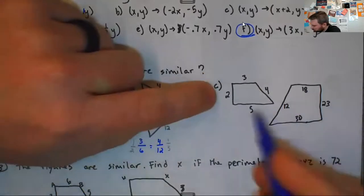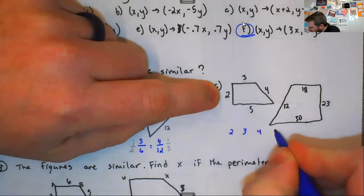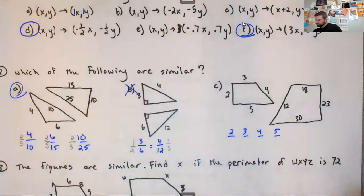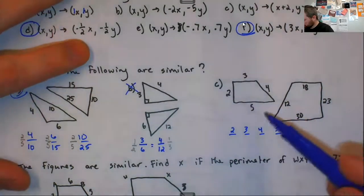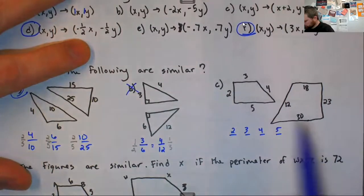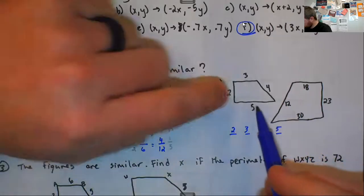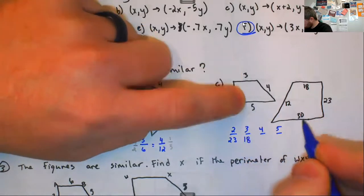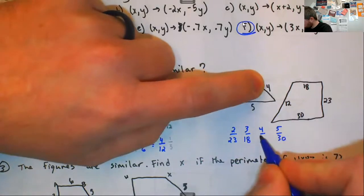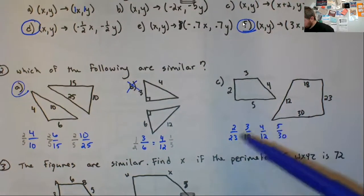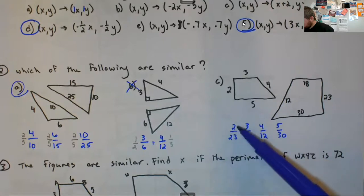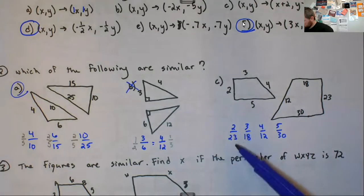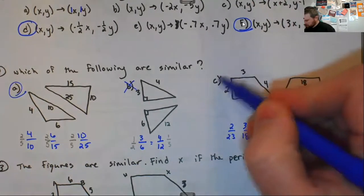And here, we'll go smallest to largest. So we've got two, three, four, and five. You need to go with the right order. So two goes with 23, and then three goes with 18, five goes with 30, and four goes with 12. We can see here that it didn't go in the right order. Like this one went from smallest to largest. This does not go smallest to largest. So you can see we can't reduce 2 over 23, and these are clearly not even close to 2 over 23. So that one's not similar.